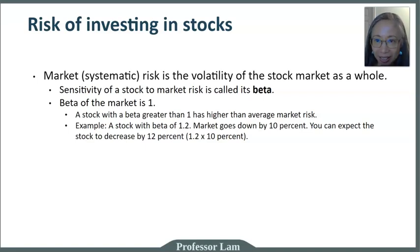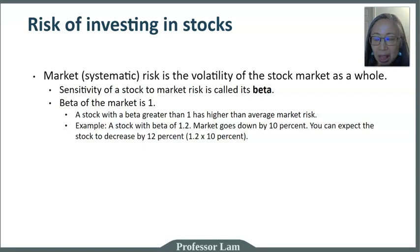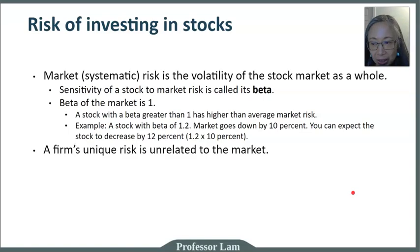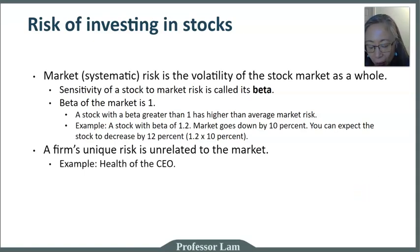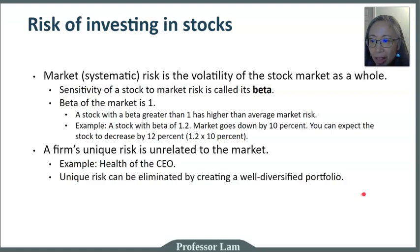Overall, day after day and year after year, this is what you can expect from systematic risk. In addition to systematic risk, a company also faces unique risk, called unsystematic risk, which is unrelated to the market. An example of unique risk could be the health of the CEO or a lawsuit that is unique to the company but not common to the market or industry as a whole. The good news is that unique risk can be eliminated if you have a well-diversified portfolio.